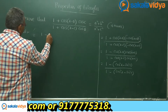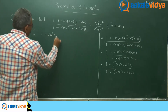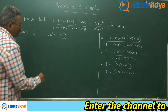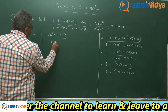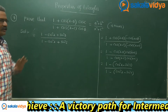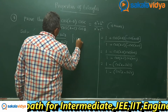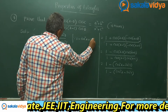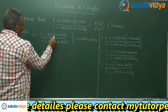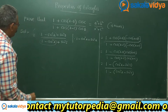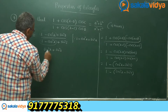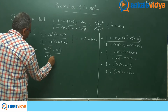Expanding: 1 minus cos squared a plus sin squared b, upon 1 minus cos squared a plus sin squared c. Now, using the formula 1 minus cos squared a equals sin squared a, we replace 1 minus cos squared a with sin squared a in both numerator and denominator. We get sin squared a plus sin squared b, upon sin squared a plus sin squared c.